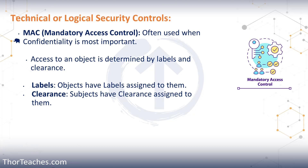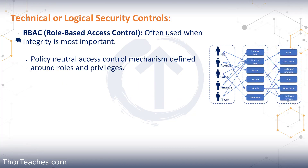Then we have RBAC — role-based access control. We have touched on that a couple of times. This is when integrity is most important, and this is what the vast majority of the private sector uses. It's policy-neutral access control defined around roles and privileges. Access is assigned to a job role — if you are a cybersecurity analyst, you get cybersecurity analyst rights; if you are a network administrator, you get network administrator rights. Most of the time this comes with a need to know — we give you access to more than you need for your day-to-day job, but for you to be allowed to access that data, you have to have a need to know.